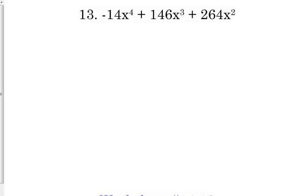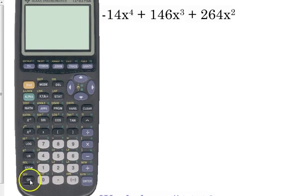Dead giveaways on number 13 that there is a GCF. Number one, it starts with x to the fourth. We're factoring quadratics. That means they're x², not x to the fourth. So, when you look at all those, they all have at least x². Another giveaway is that it's negative 14. Anytime our leading coefficient, that first number is negative, we want to get that out of the way. Now, the question is, is 14 the GCF, or is it one of the factors of 14? So, I do need to go ahead and divide my other numbers by negative 14.